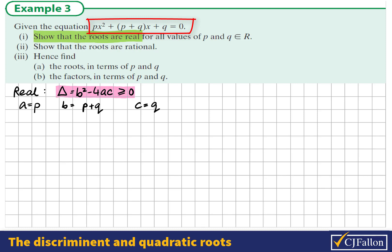Let's sub these values into the discriminant formula to see what we end up with. So the discriminant is (p + q)² - 4pq.